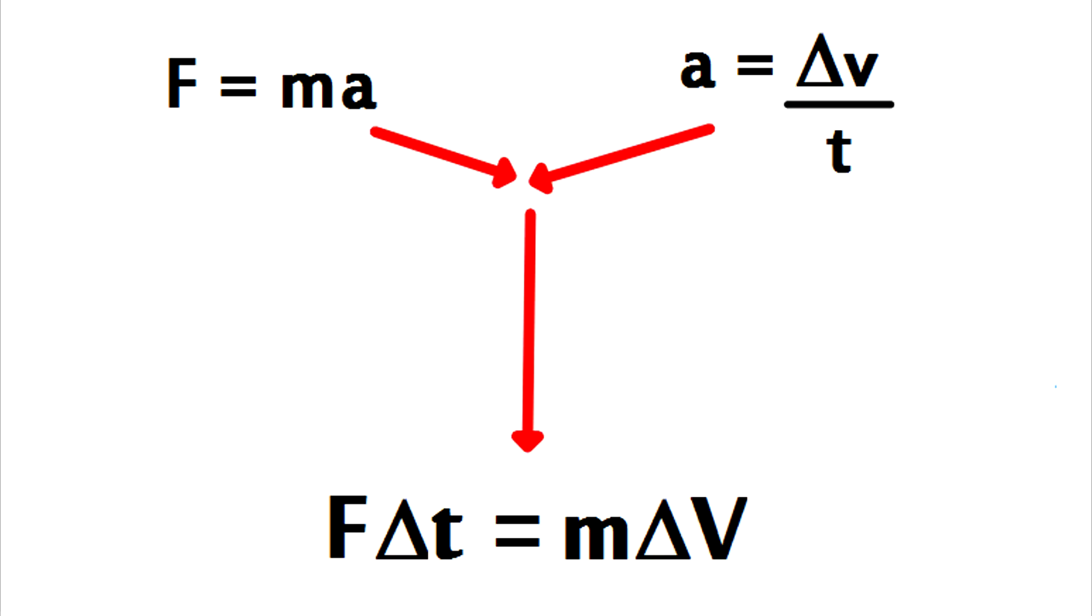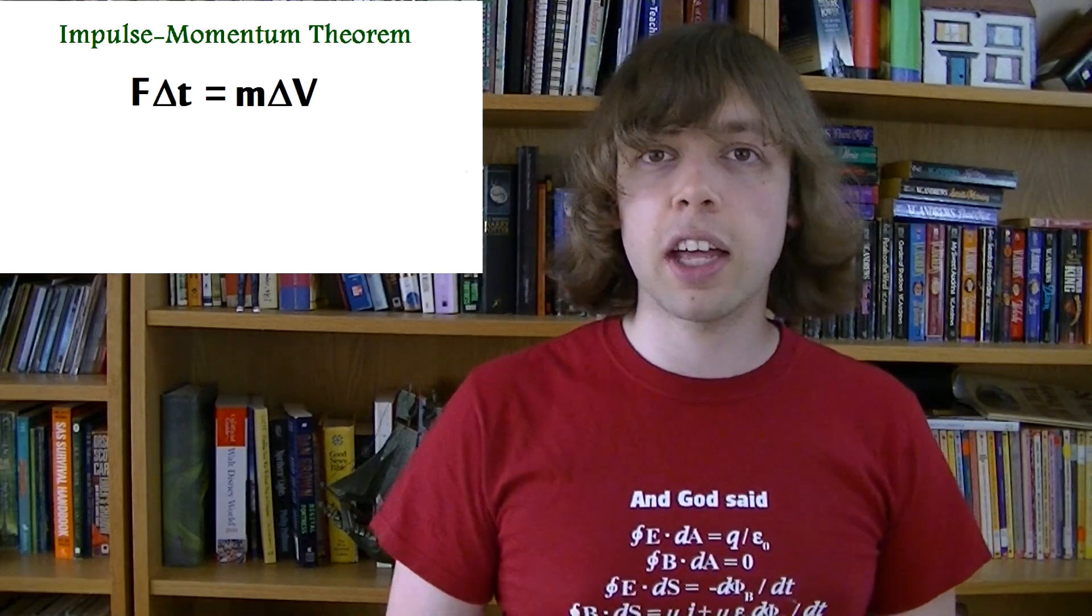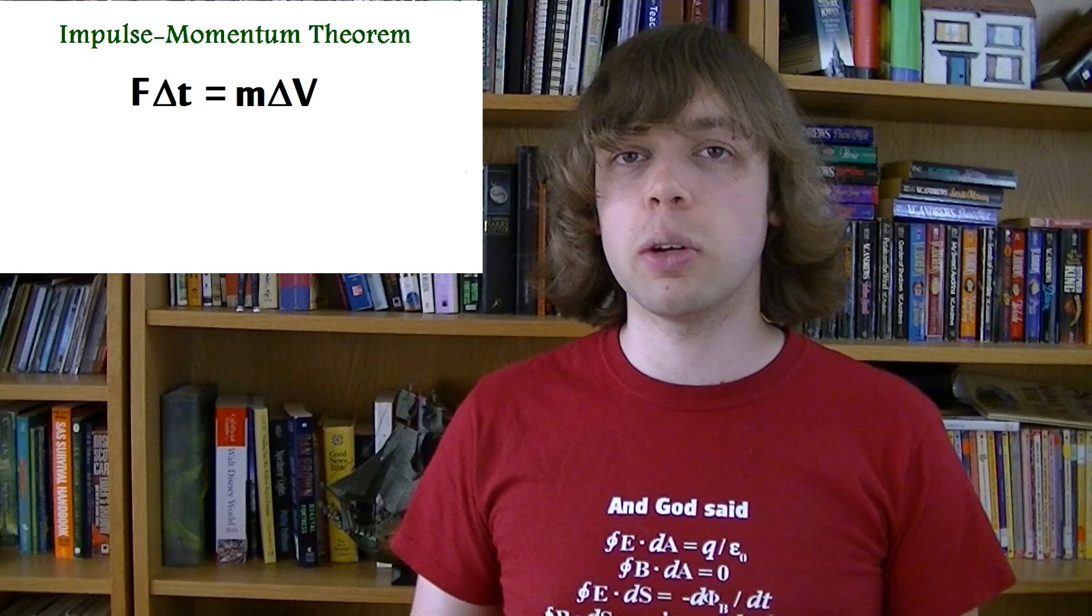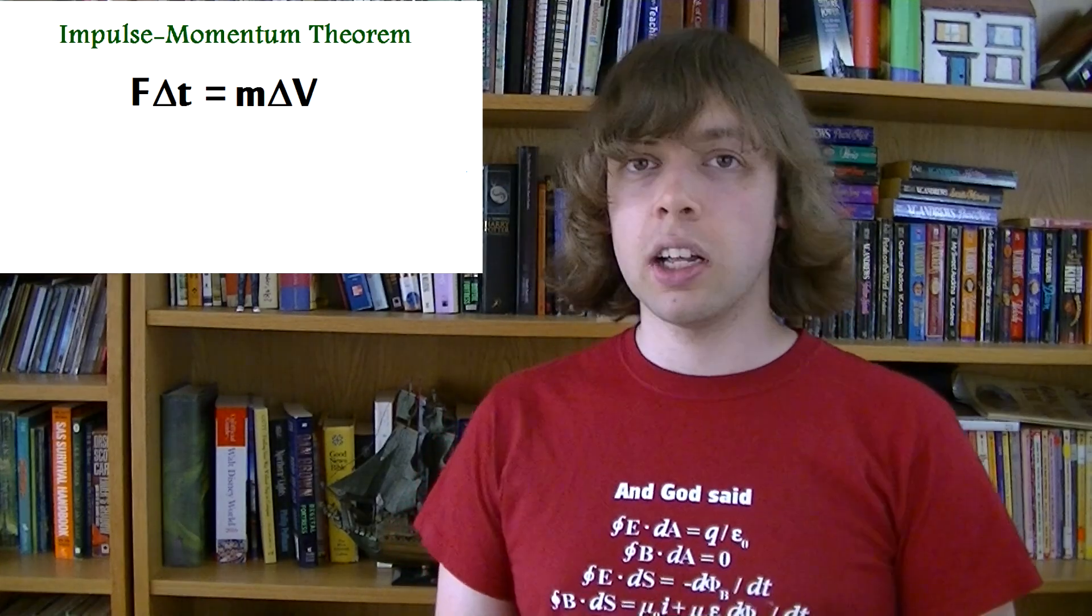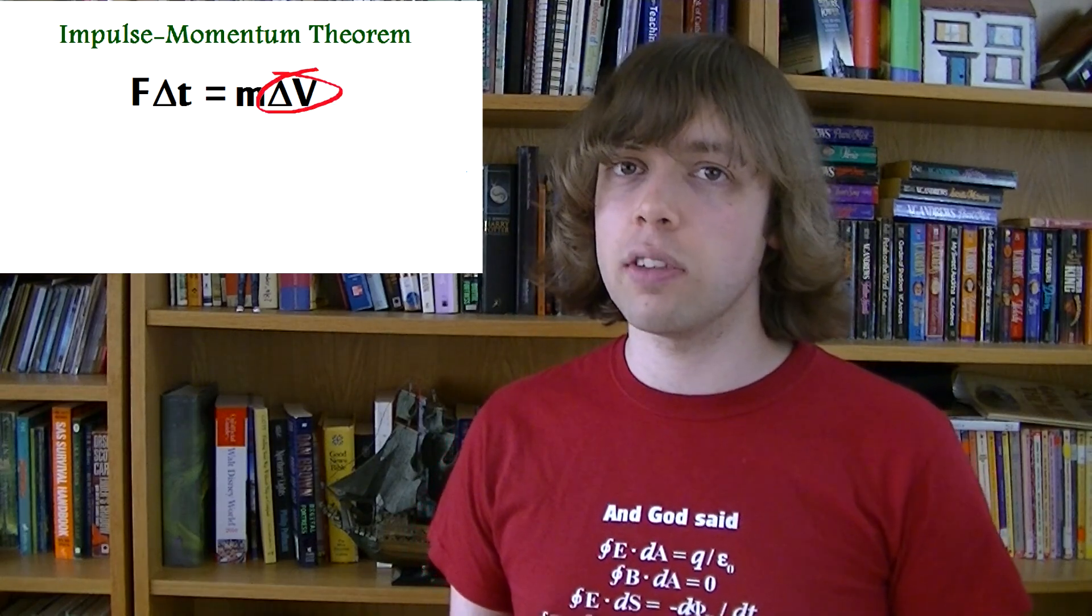For those who are interested, you can also derive the equation like this. We call this equation the impulse momentum theorem. It simply says that the impulse received by an object is equal to the change of momentum of that object. The little triangle, the little delta symbol, Greek letter delta, means change.